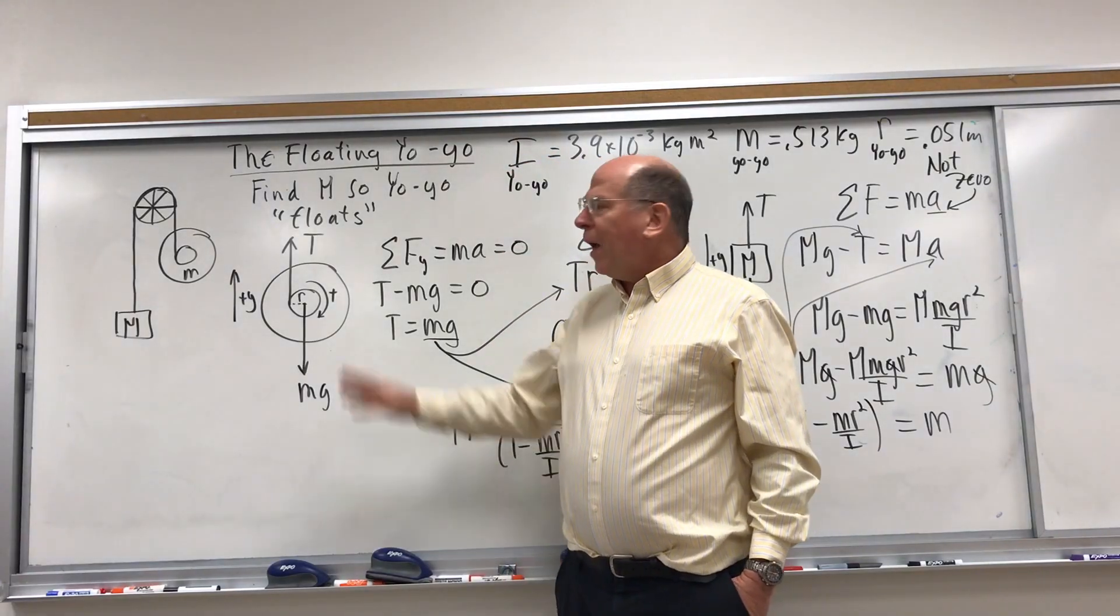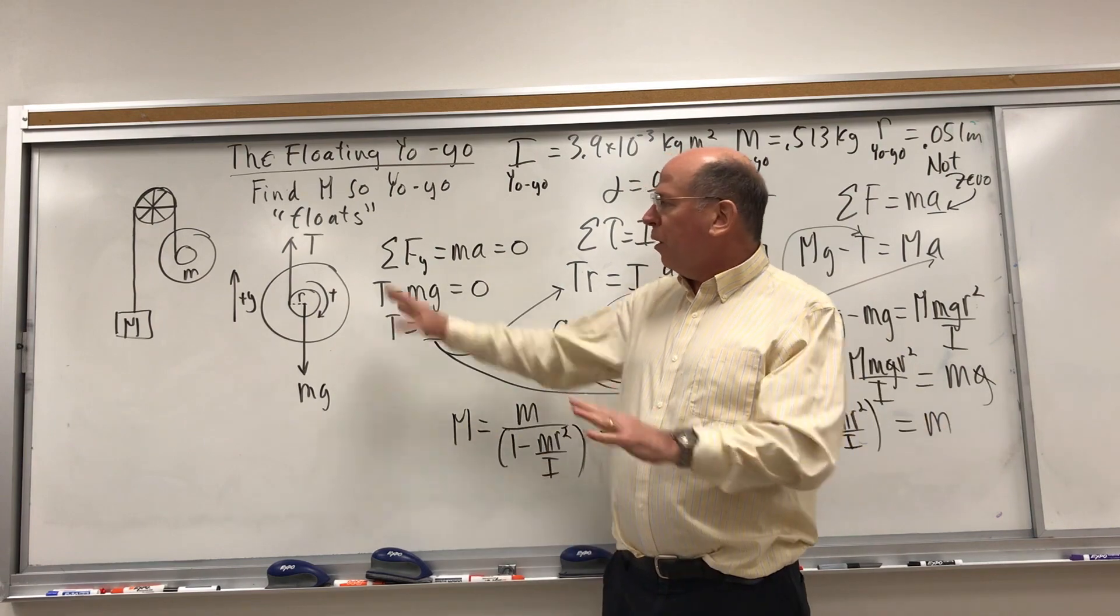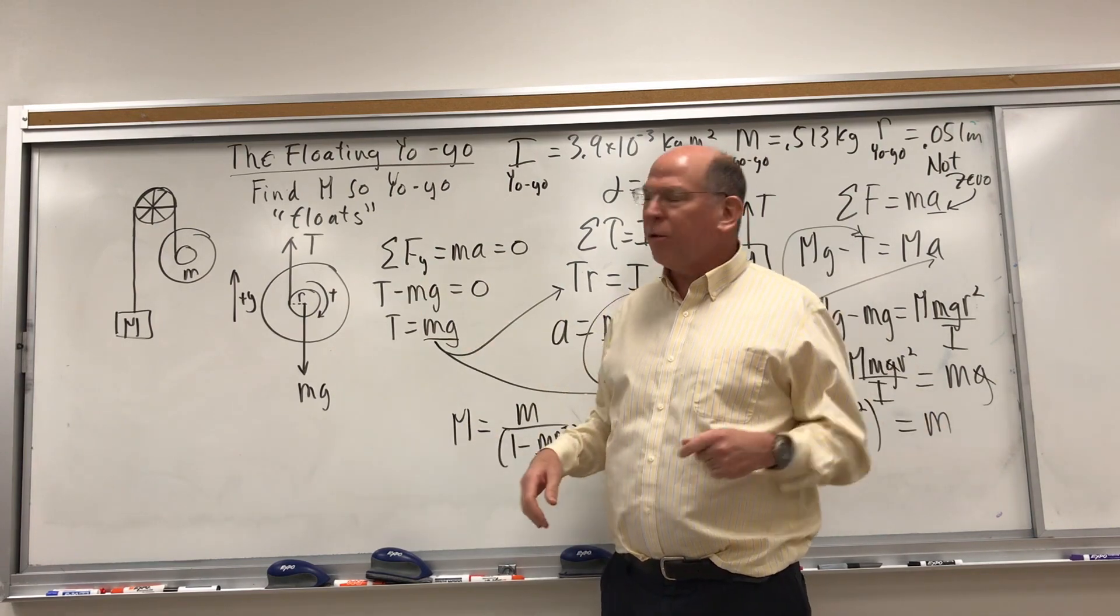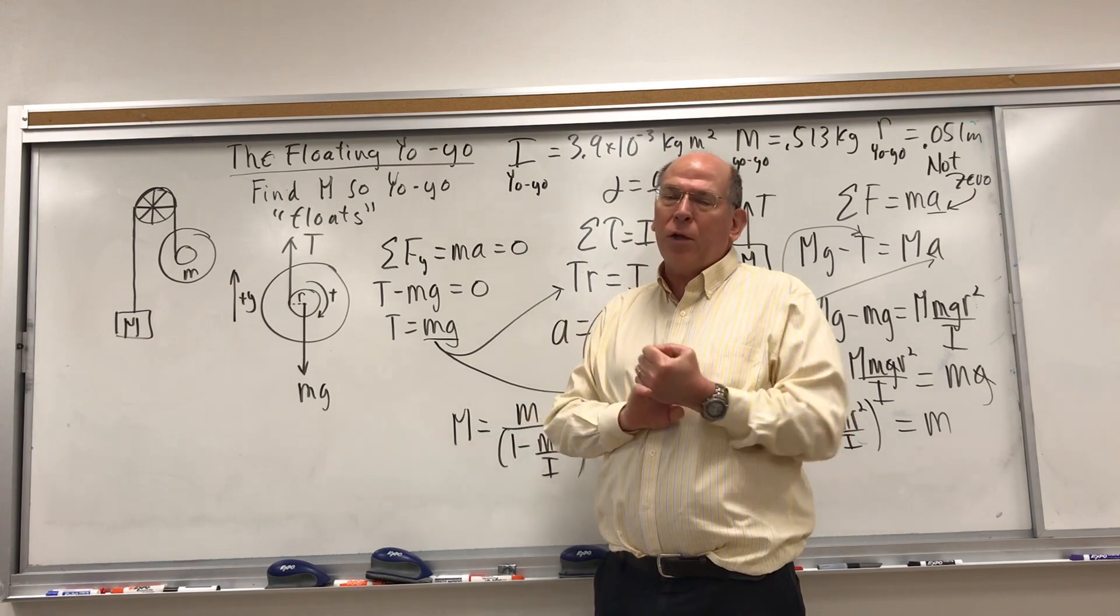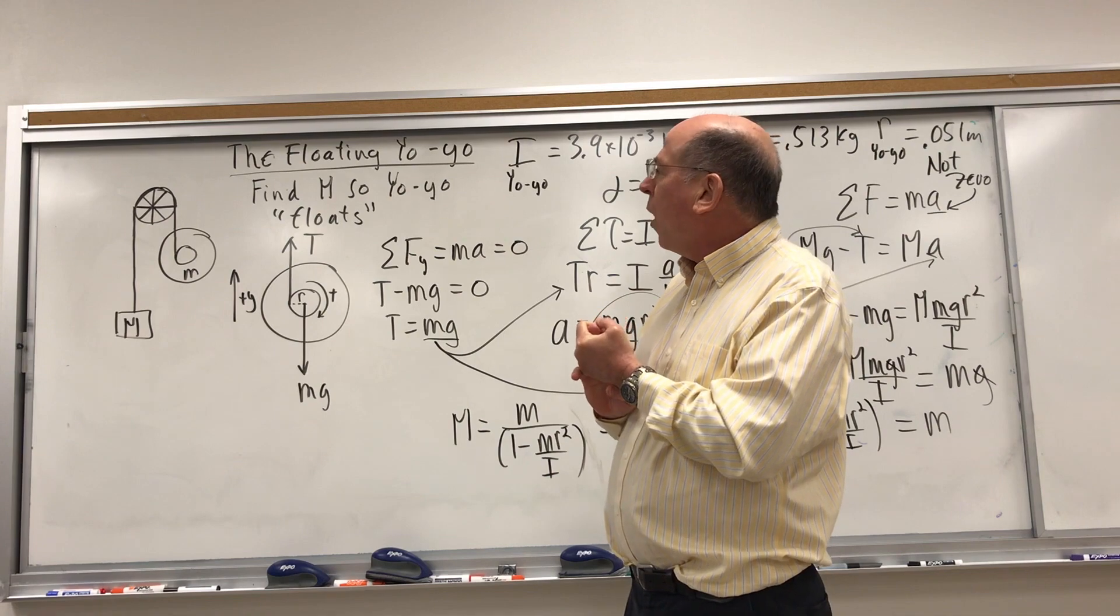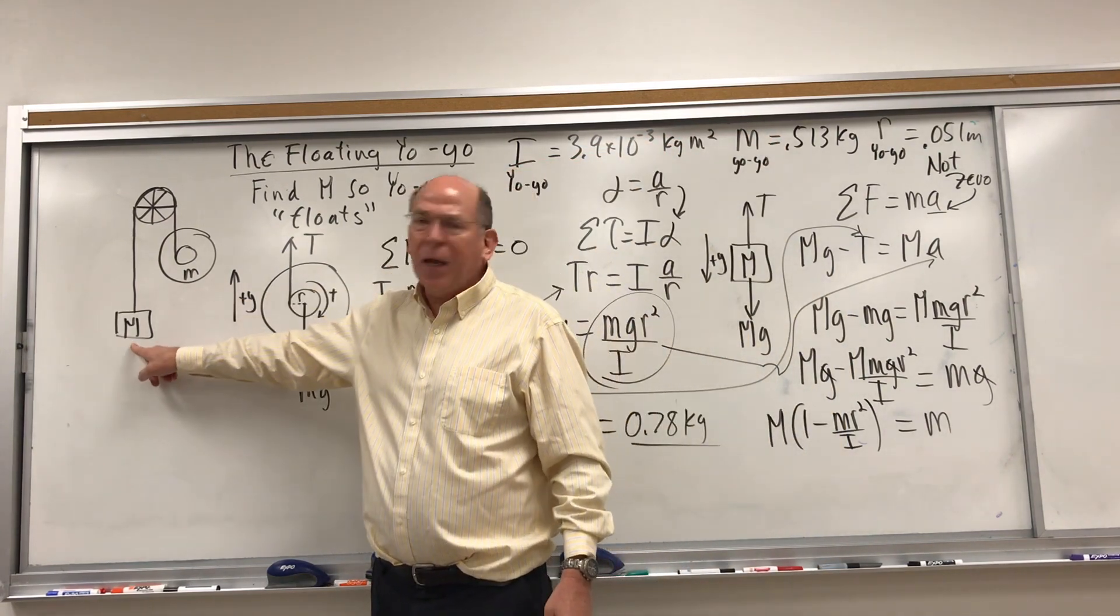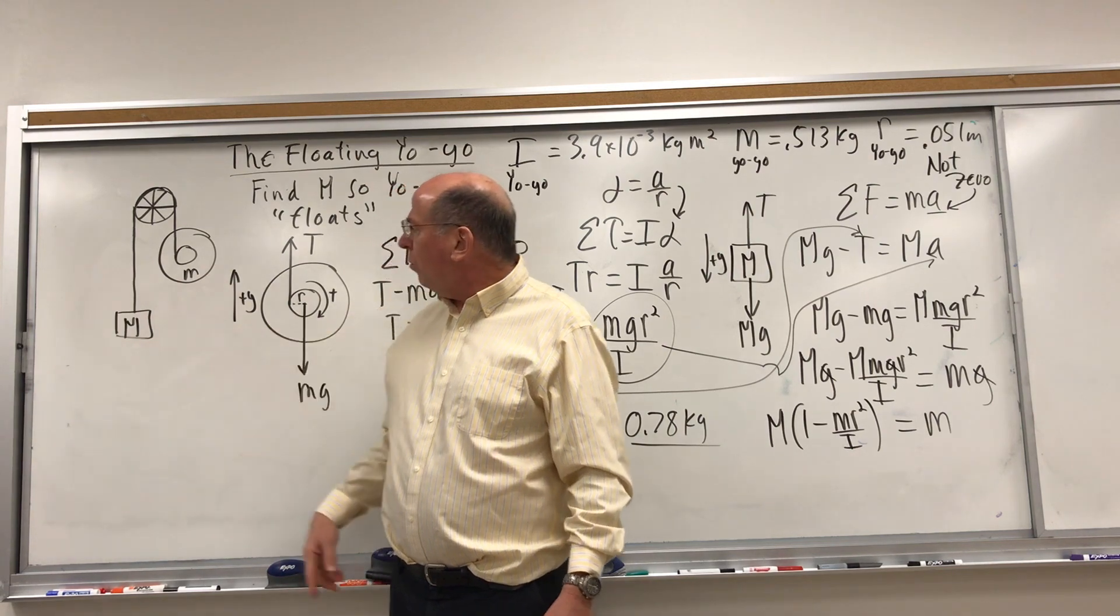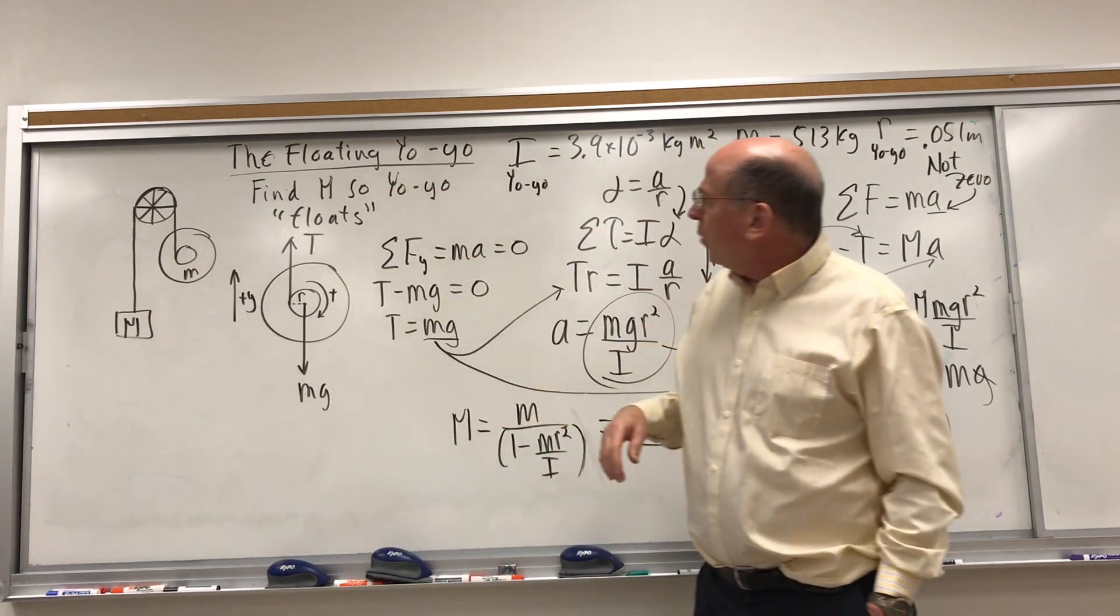Here's the analysis for the floating yo-yo. I won't go into all the details. If you're a physics teacher you can work this out. I am doing this for an AP Physics Mechanics C class, so it is a fairly advanced rotational dynamics problem. Here's a sketch of the setup. I'm calling Big M the falling mass as our unknown, and then this would be the yo-yo.